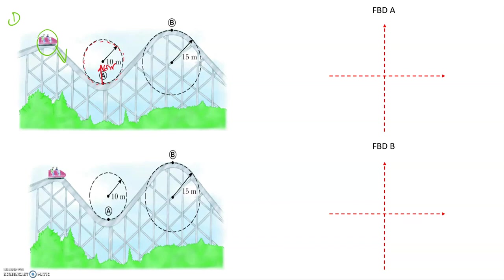The next step is to find the T direction. The T direction is always going to be perpendicular to the R direction. In this case, it goes out to the right from point A, perpendicular to R, and we call that the positive T direction. Now that we have our coordinate system, we can draw our free body diagram.